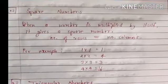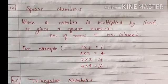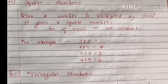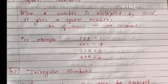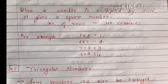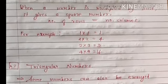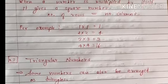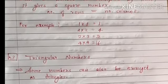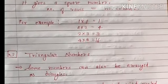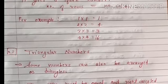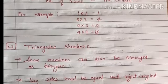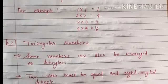Now square numbers. When a number is multiplied by itself, it gives a square number. जब किसी number को खुद से multiply किया जाता है तो square number बनता है — उसमें number of rows और number of columns same होते हैं। Example: 1×1=1, 2×2=4, 3×3=9, 4×4=16, and so on। ऐसे numbers को square numbers बोलते हैं।